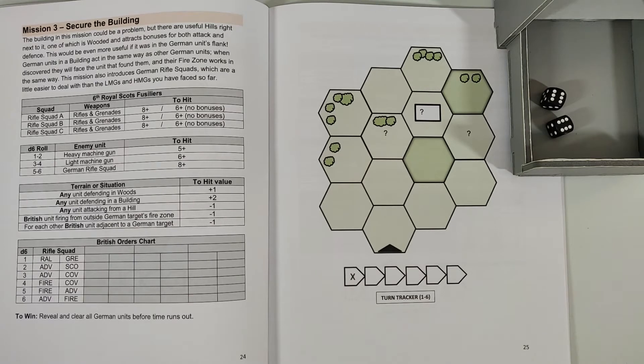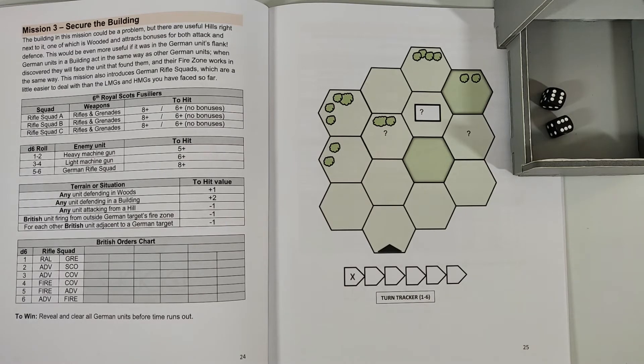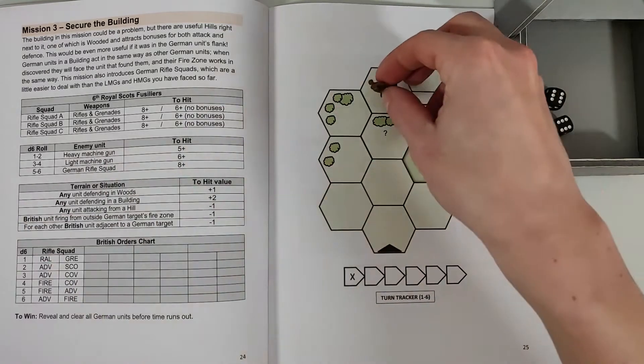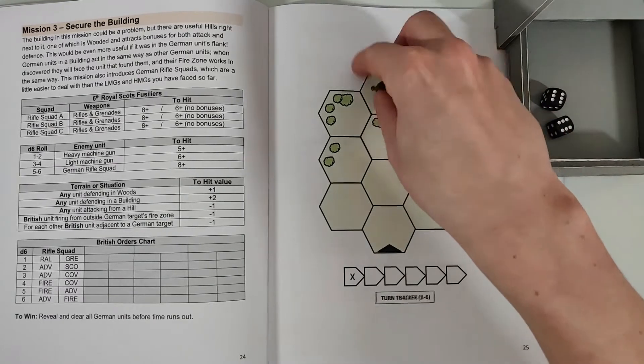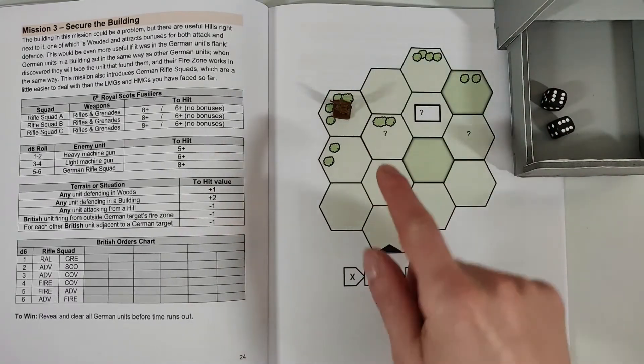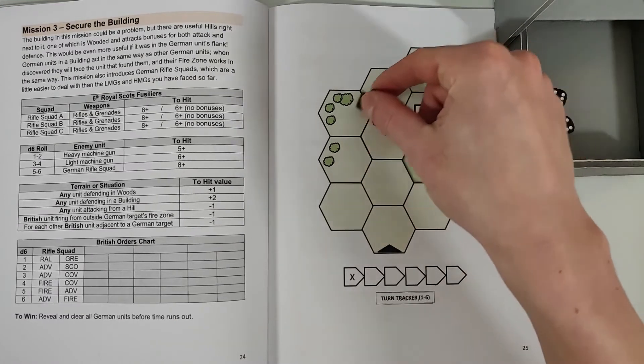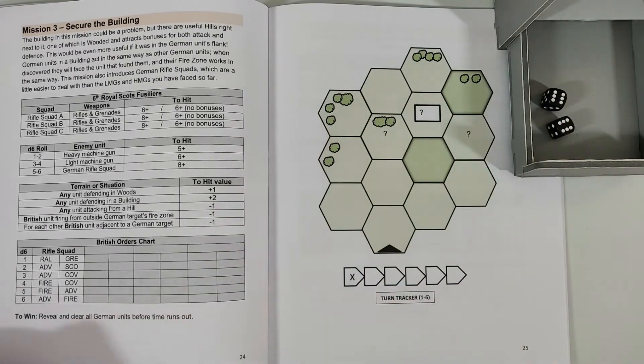Before we start playing, I hope that you watched my previous videos on mission 1 and mission 2. This is gonna be mission 3. I just want to point out that Mike, the designer of this game, was nice enough to watch those videos and give me a comment. One error I did in my last video was I actually moved backwards, and you can't actually do that - you can only move forwards. You can never move backwards with your troops.